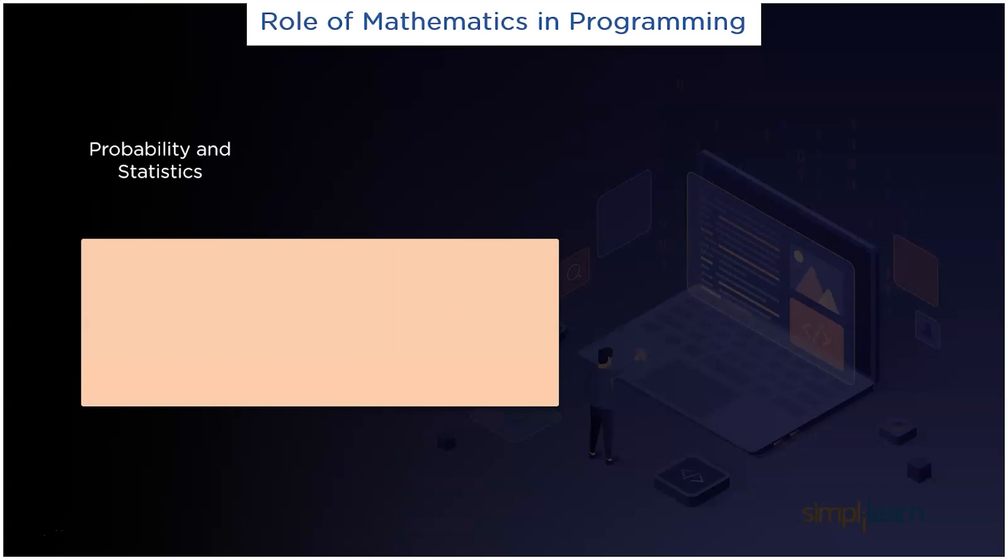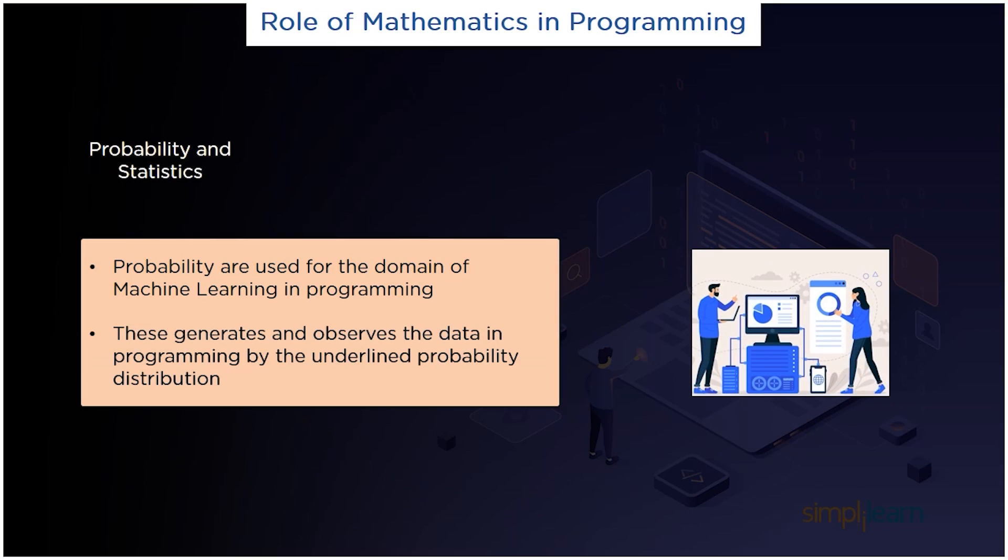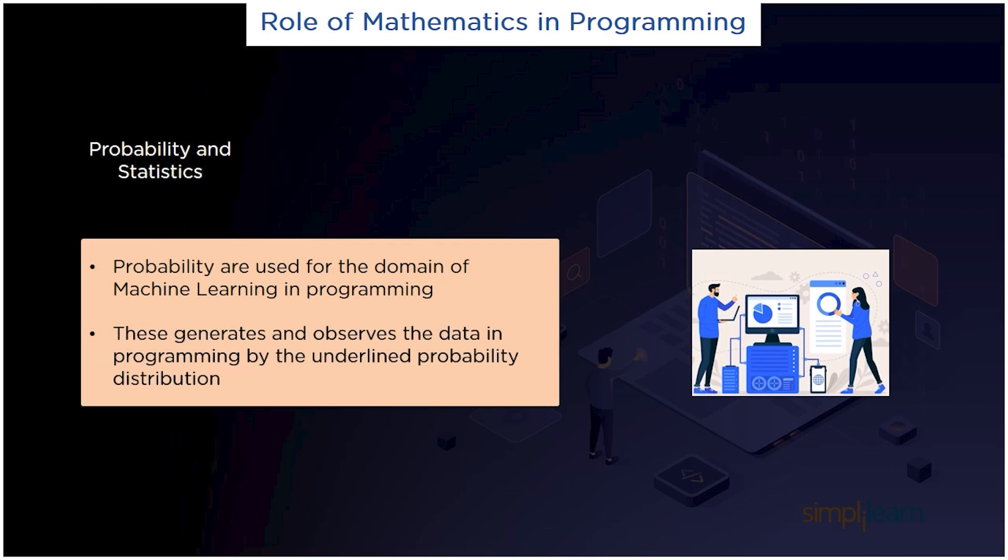Probability and statistics. Probability is used for domain of machine learning programming. Probability and statistics show up all the time. The entire domain of machine learning is based on probability and statistics. Each machine learning algorithm is modeled by an underlying probability distribution that generates the observed data.